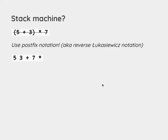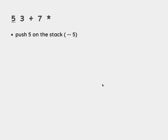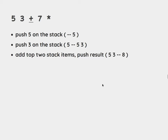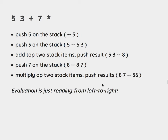You write it like this: 5 3 plus 7 multiply. First, 5 pushes a number on the stack — in this case, 5. Then we go to 3, which pushes a 3 on the stack. The plus then takes the top two stack items, adds them together, and pushes the result — so we transform the 5 and 3 into an 8. Then we push the 7 on the stack, so the stack becomes 8, 7. And then multiply multiplies the top two stack items and pushes the result, so we get 56.